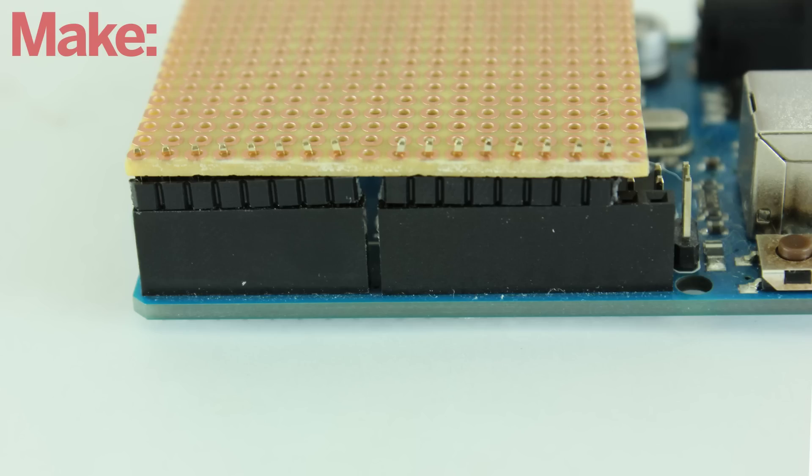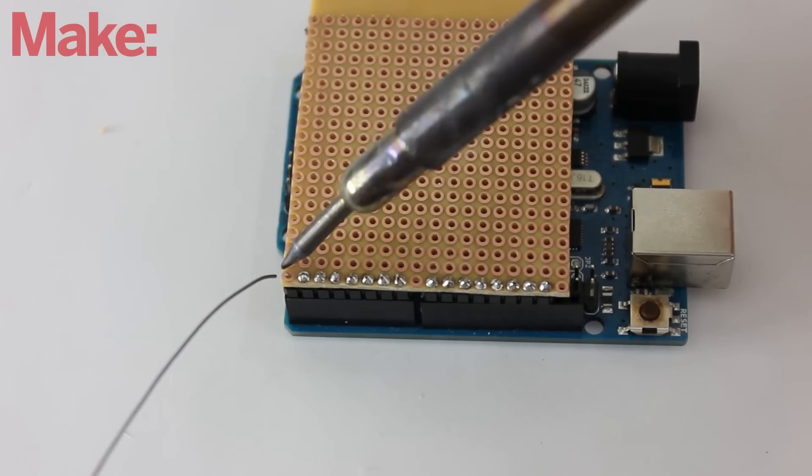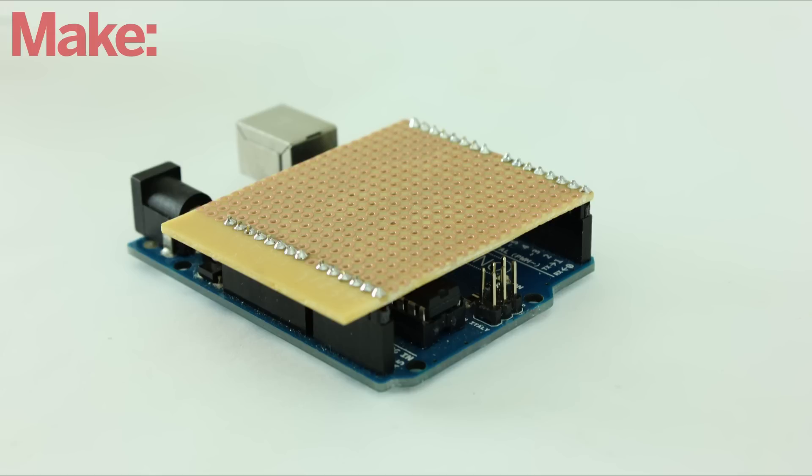Then, insert the header pins into the Arduino and fit the circuit board on top. You can then solder the header pins to the circuit board. This gives you a basic protoshield. This is a versatile platform that you can use to build any kind of shield that you want.